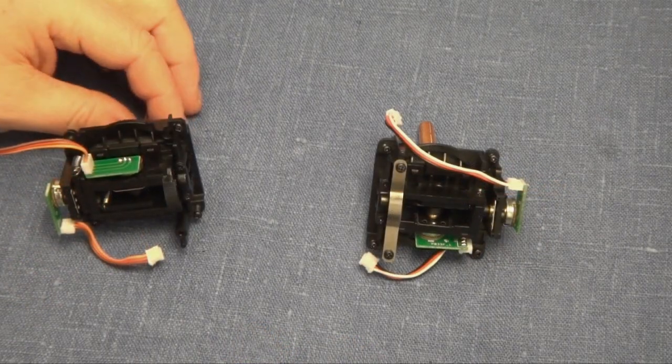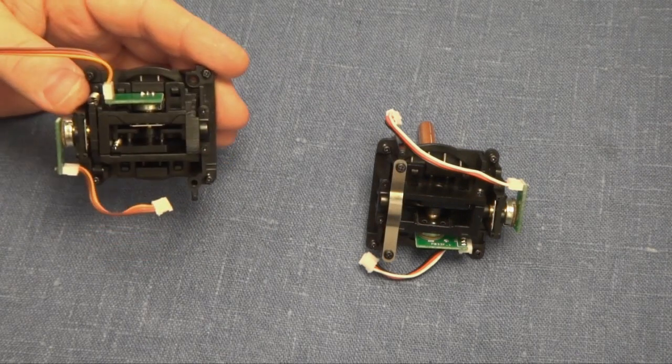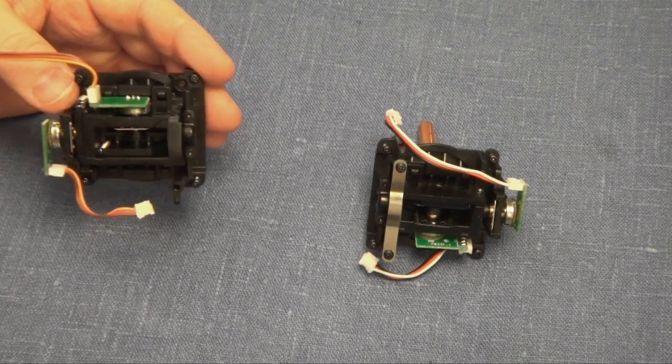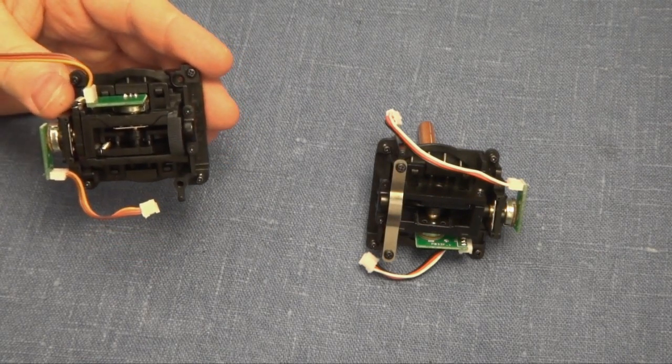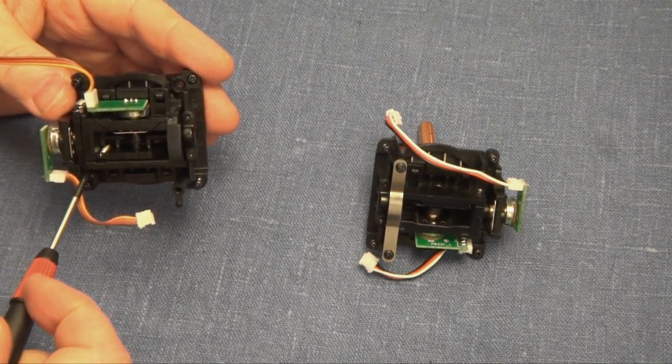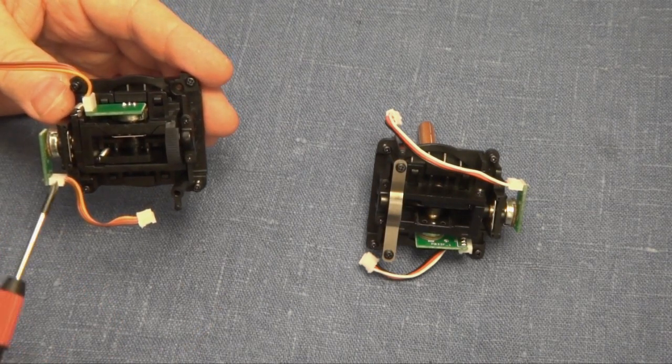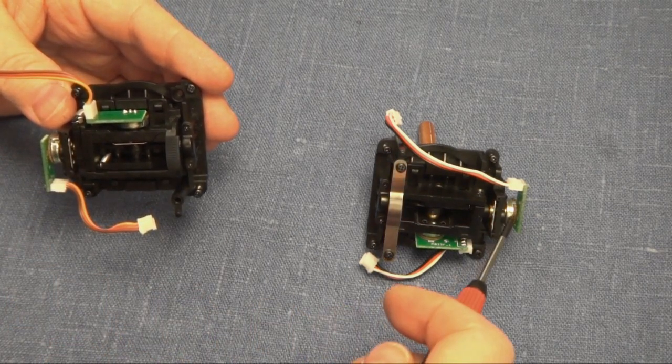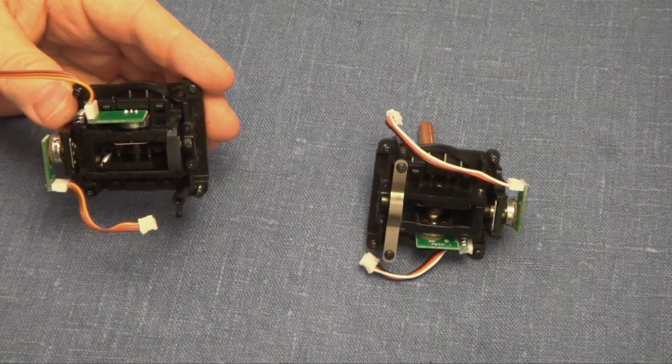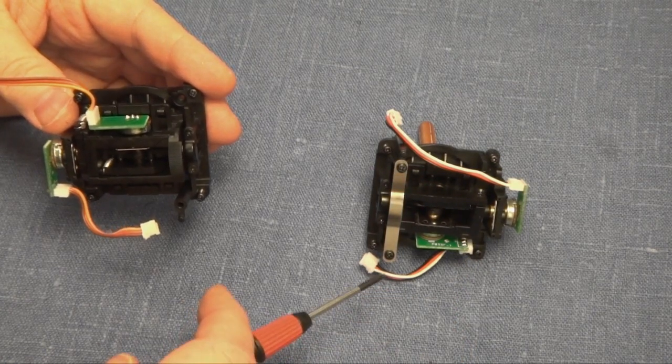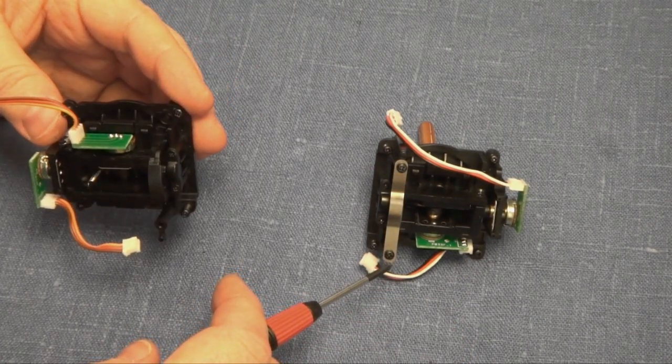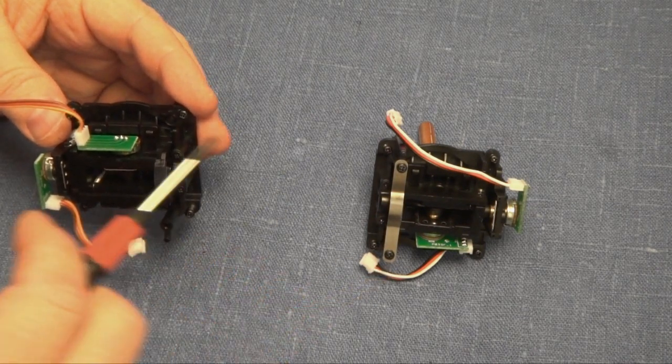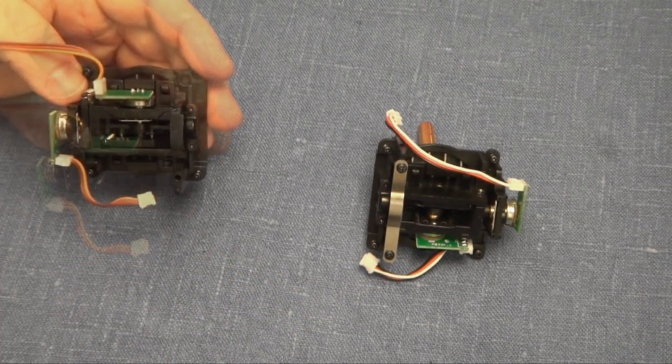And this is how the gimbals look all by themselves. And what we're going to do is to remove that part there. It's an arm with a spring. And there are a couple of pins under it that also need to go. And from the other gimbal we need to take the spring and move it back to the first.